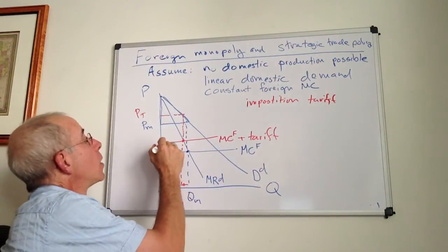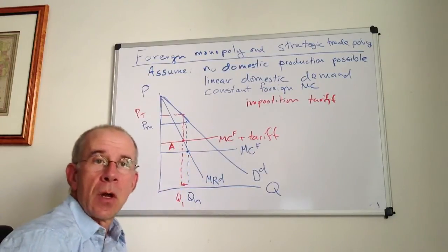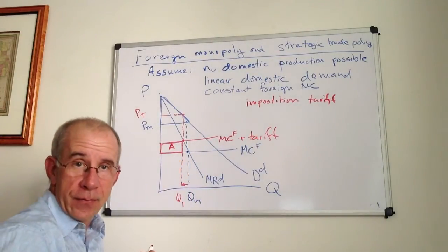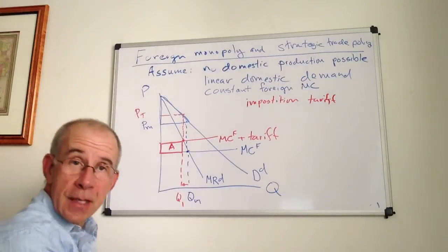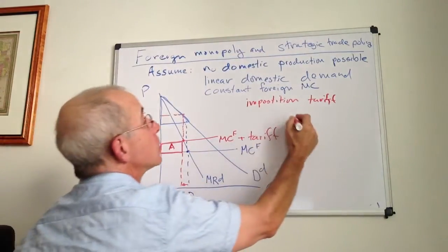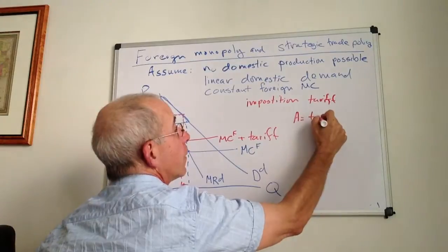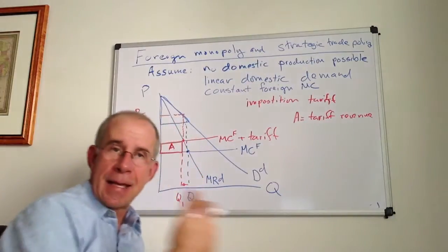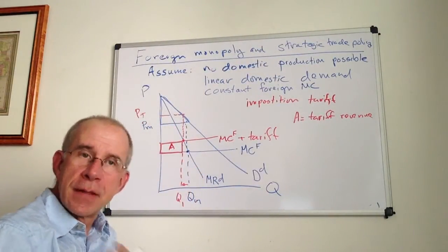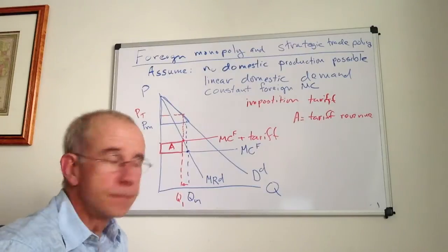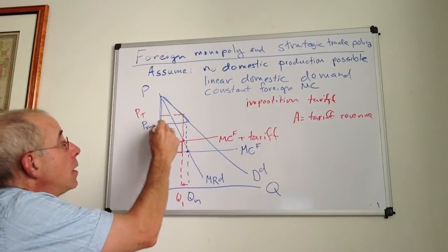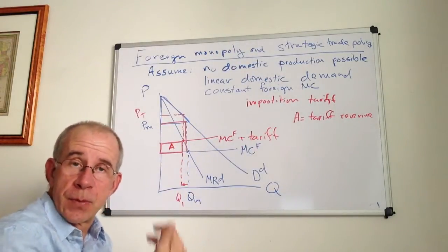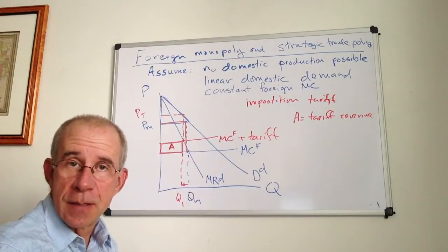Well, first, we have this area called A. A is the tariff rate multiplied times the amount that's sold in this market. So A is the tariff revenue. And this is taken out of the profits that the foreign firm used to earn. And the foreign firm used to earn profits equal to the difference between the price and the marginal cost, multiplied times the imports.